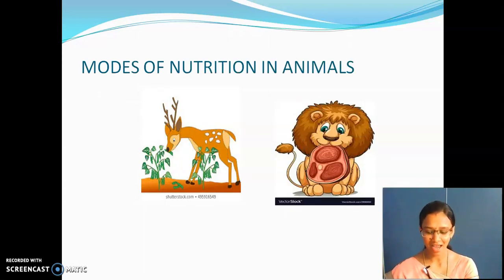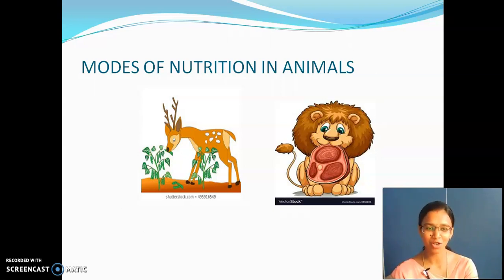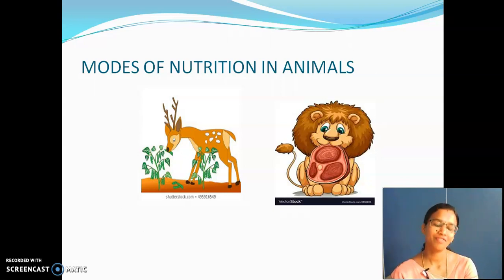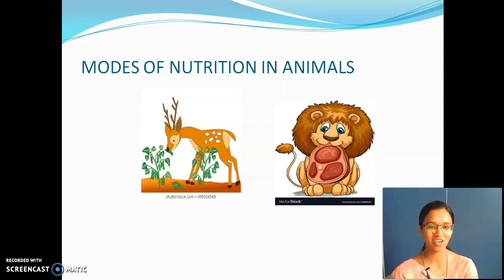Modes of nutrition in animals. What are the modes of nutrition in animals? Here you are able to see pictures — a lion eating flesh and a deer eating grass. By seeing this, what comes to your mind? The plant-eating and flesh-eating. Based on the modes of nutrition, animals are classified into three types: herbivores, carnivores, and omnivores.